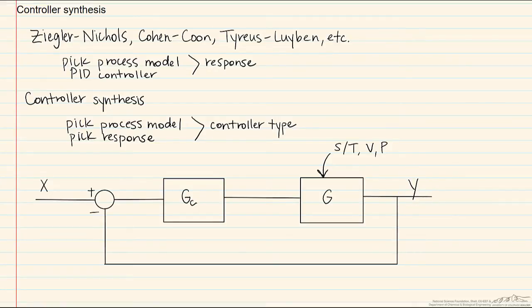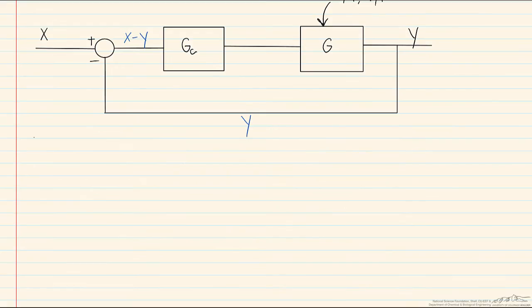If we do some block diagram algebra here we can follow the fact from this branching point that this is Y. So what we are left with at the summing point is X minus Y, and this will leave us with (X-Y) multiplied by Gc times G, and that means we have gone through these two blocks, which means that this is also equal to Y.